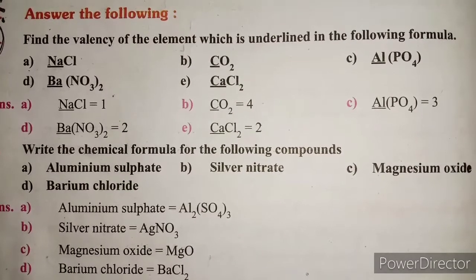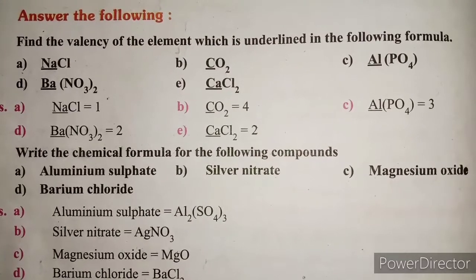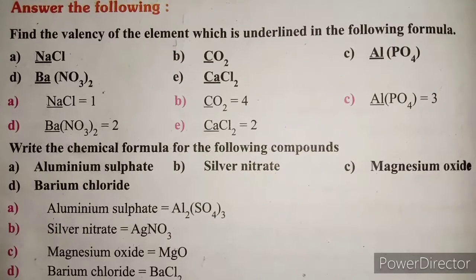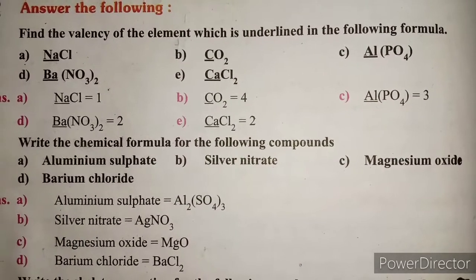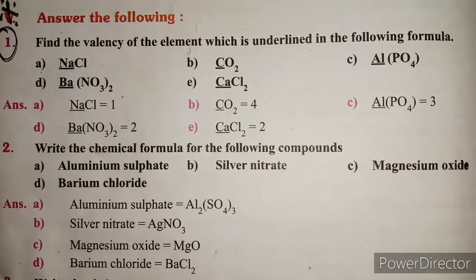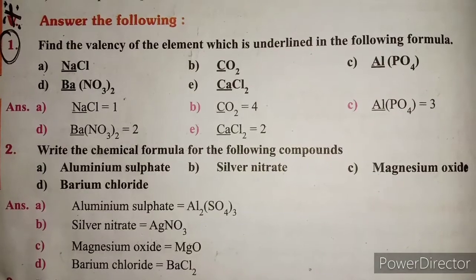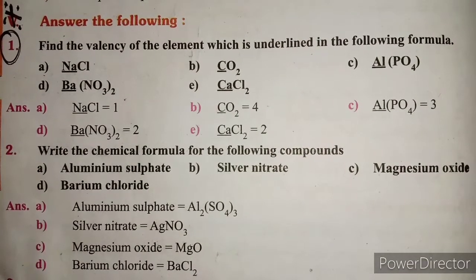Question 2: Write the chemical formula for the following compounds. Aluminum sulfate: Al2(SO4)3. Silver nitrate: AgNO3. Magnesium oxide: MgO. Barium chloride: BaCl2.